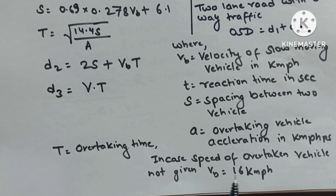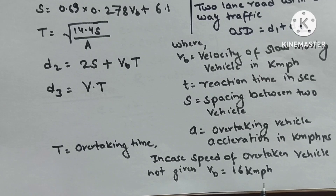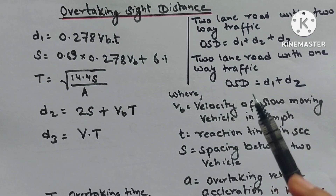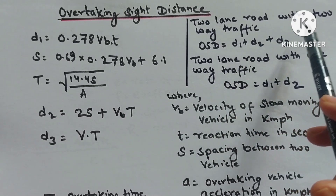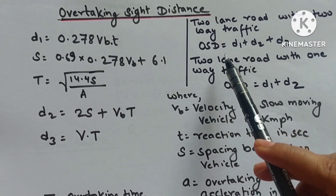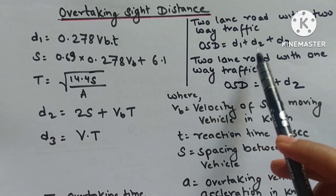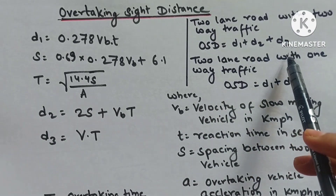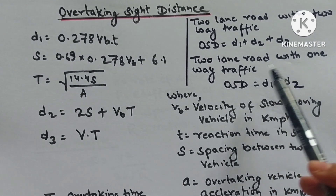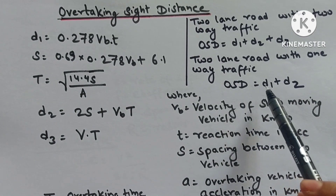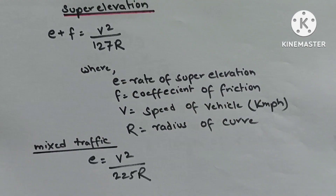When speed of the overtaken vehicle is not given, take Vb = 16 km/h. For a two-lane road with two-way traffic, OSD = d₁ + d₂ + d₃. For a two-lane road with one-way traffic, OSD = d₁ + d₂.